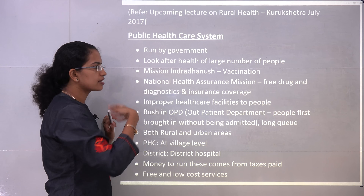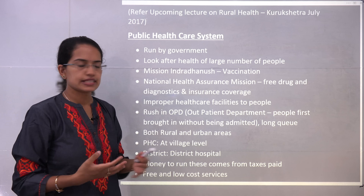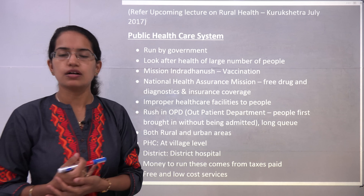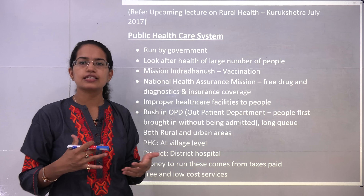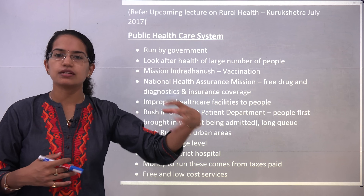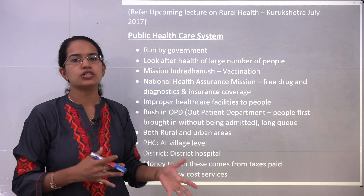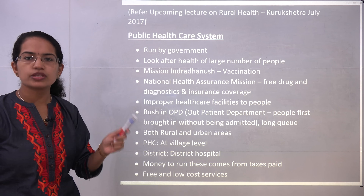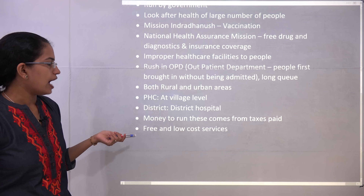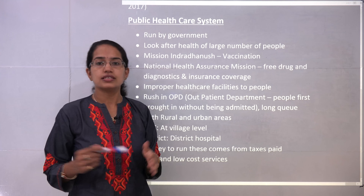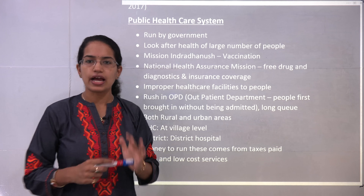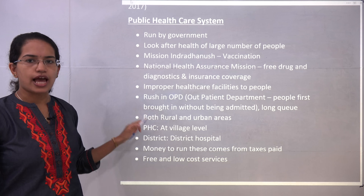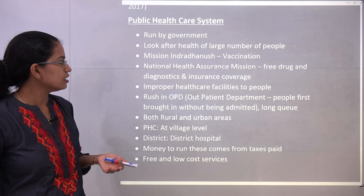These initiatives are being brought in to revamp the public healthcare system. However, due to affordability and approachability, there is high rush in the OPD — the outpatient department — where the patient is primarily seen and then shifted to the ward if need arises. Since government hospitals are run by the government, the funding comes from taxes collected. Money coming through taxes is one of the major sources for running government hospitals.